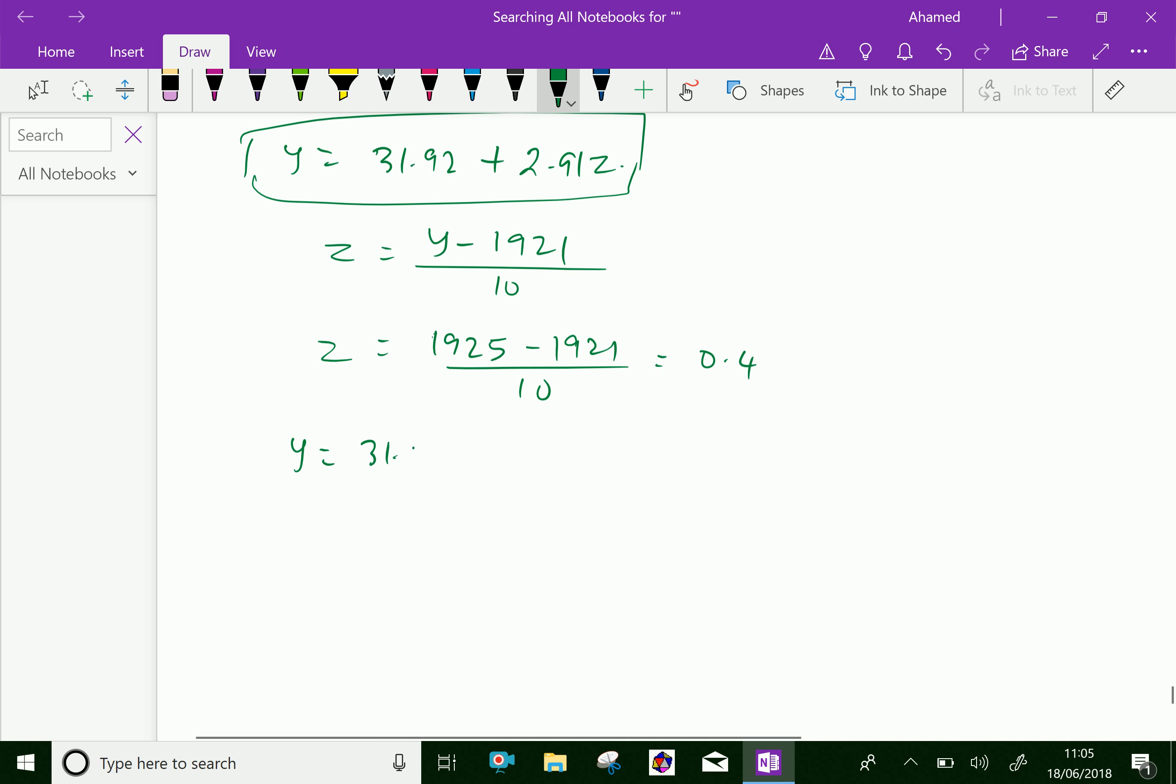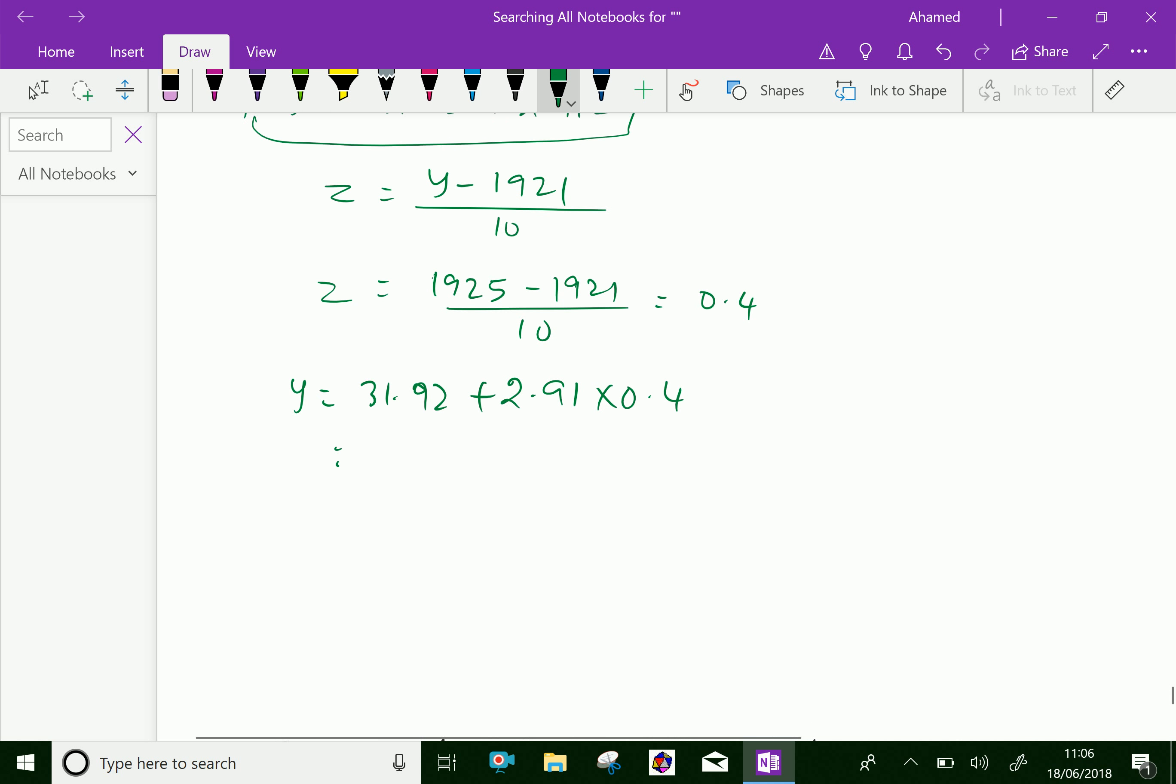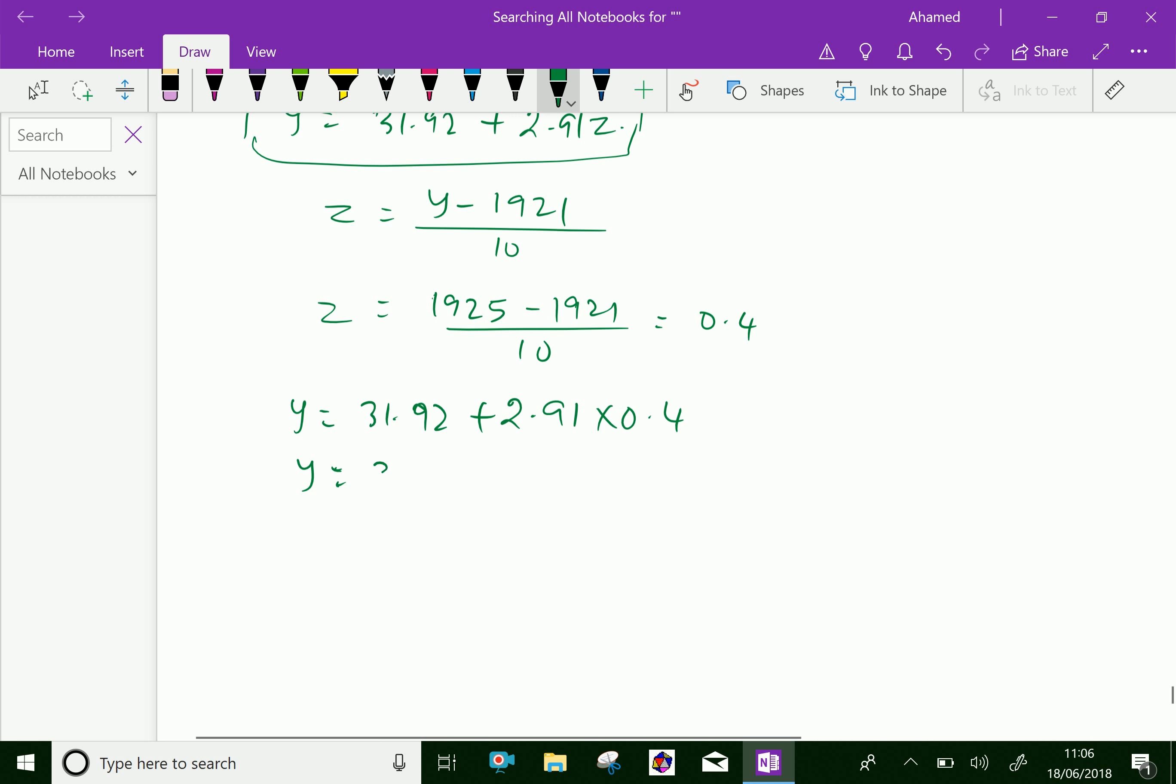Substitute this 0.4 in the equation, that is, y equal 31.92 plus 2.91 into 0.4, which equals 33.084 crores. This means at the year 1925, the India's population is 33.084 crores. We have done.